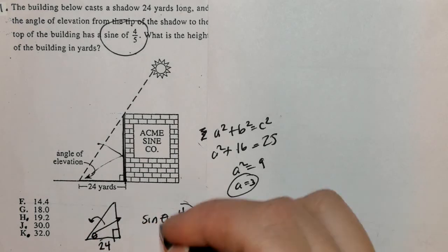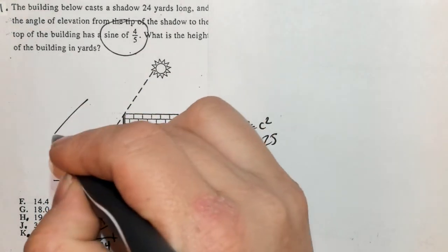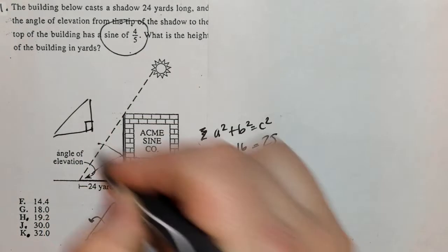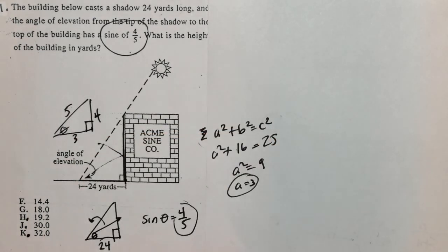So I know that this has a ratio of, if I draw this correctly, opposite for the sine of this angle is 4, hypotenuse 5, and this length is 3.